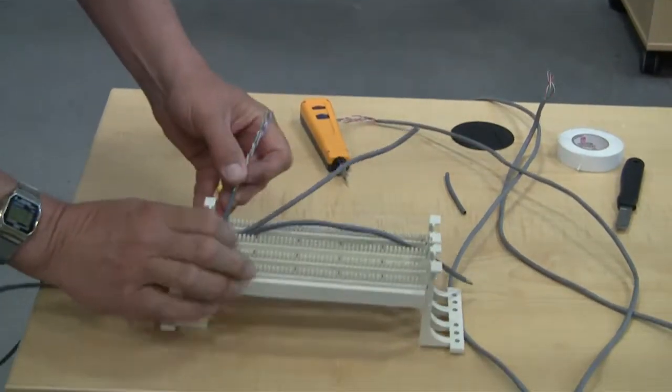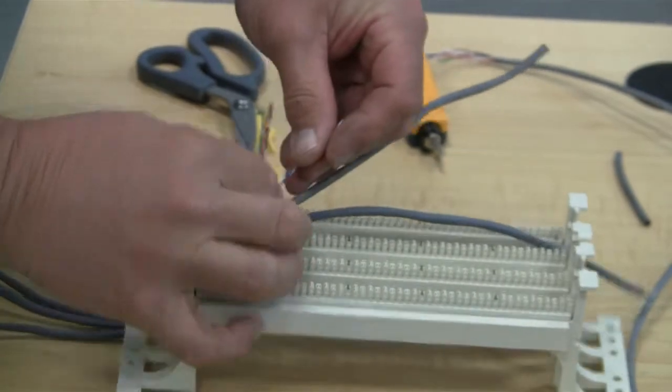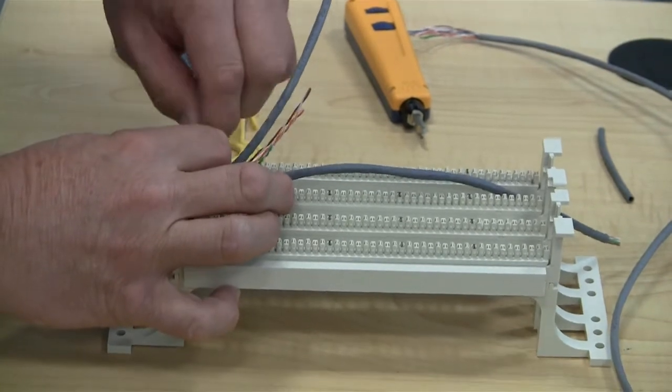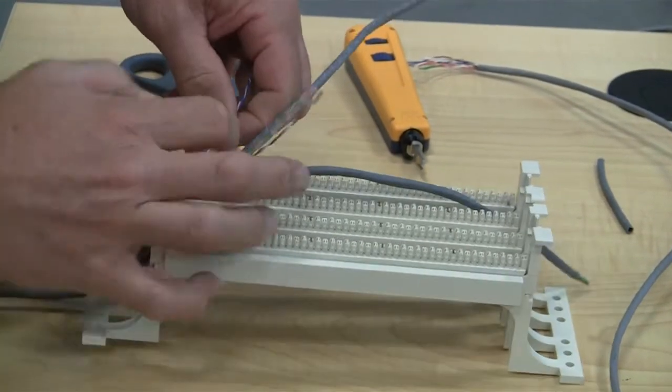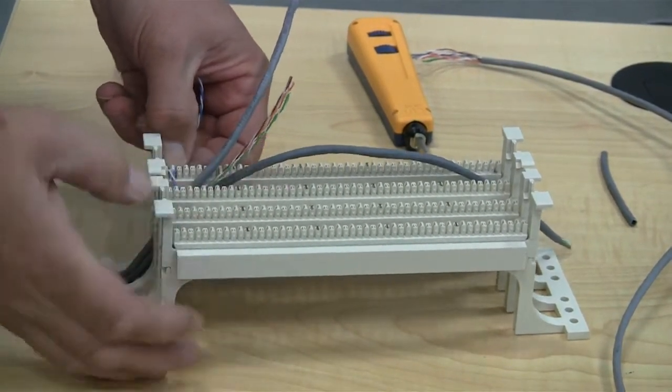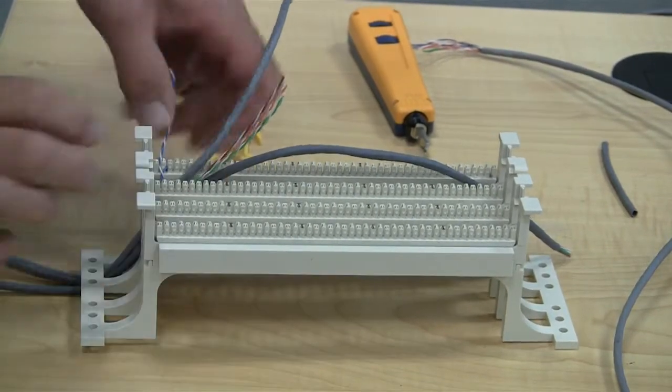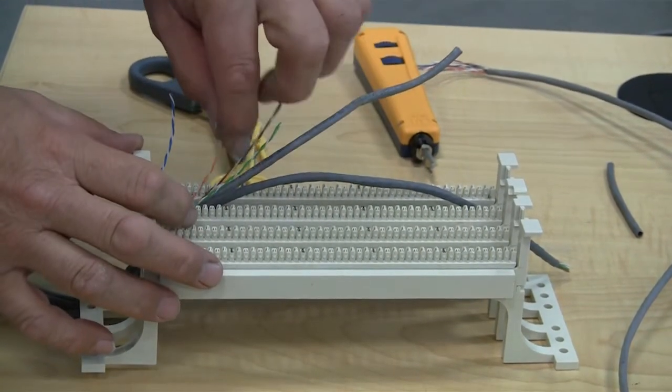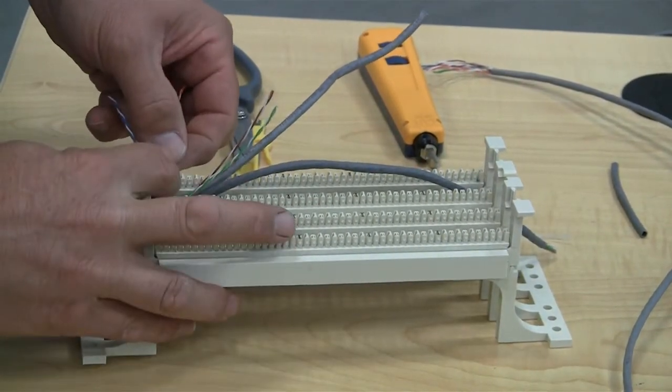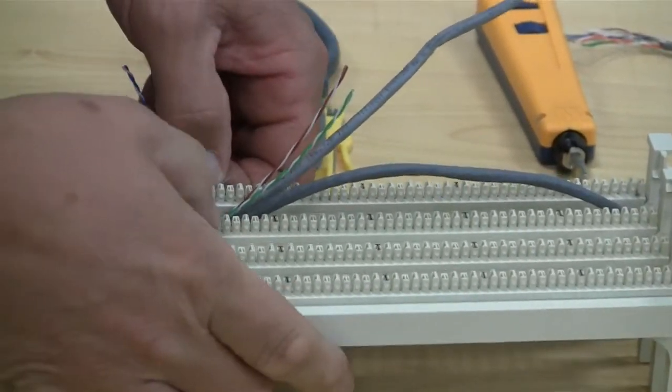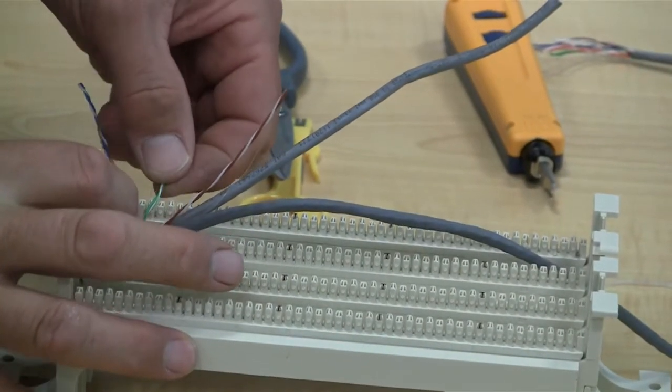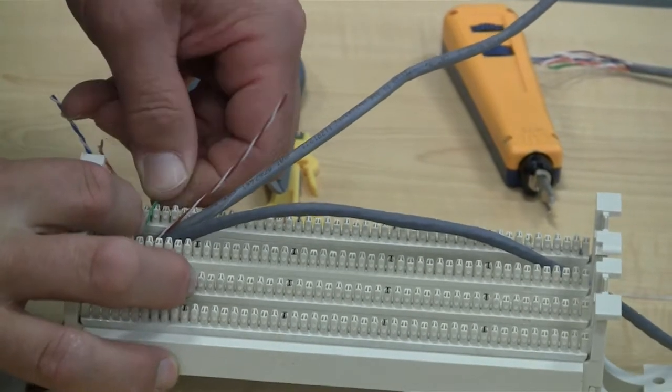So again, we're going to start with our blue white. And again, we'll want to keep no kinks, no knuckles. The best way to do this is to just twist back a little bit and use that knob or tab that's on the 110 block to help us separate the cables in the proper spot. Again, blue white, orange white, green white, brown white.